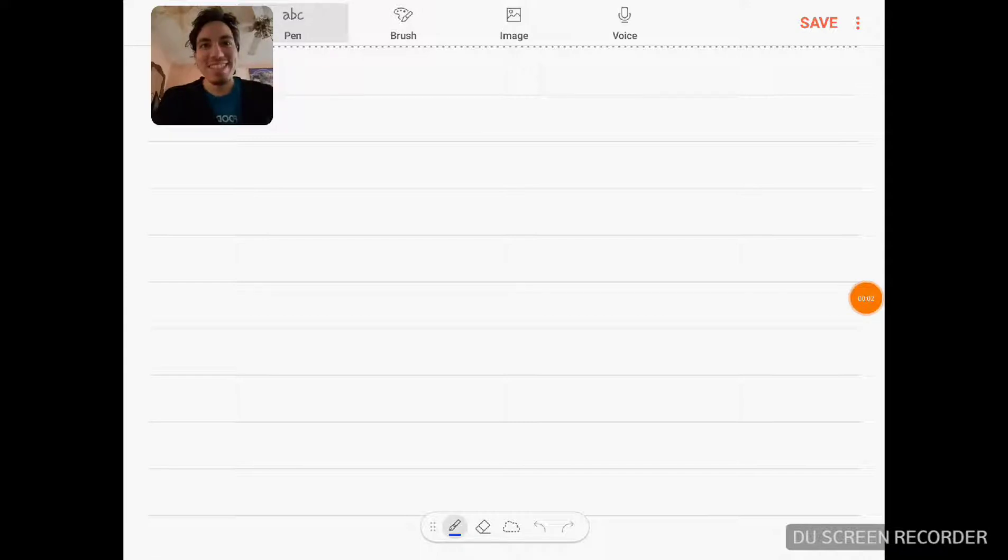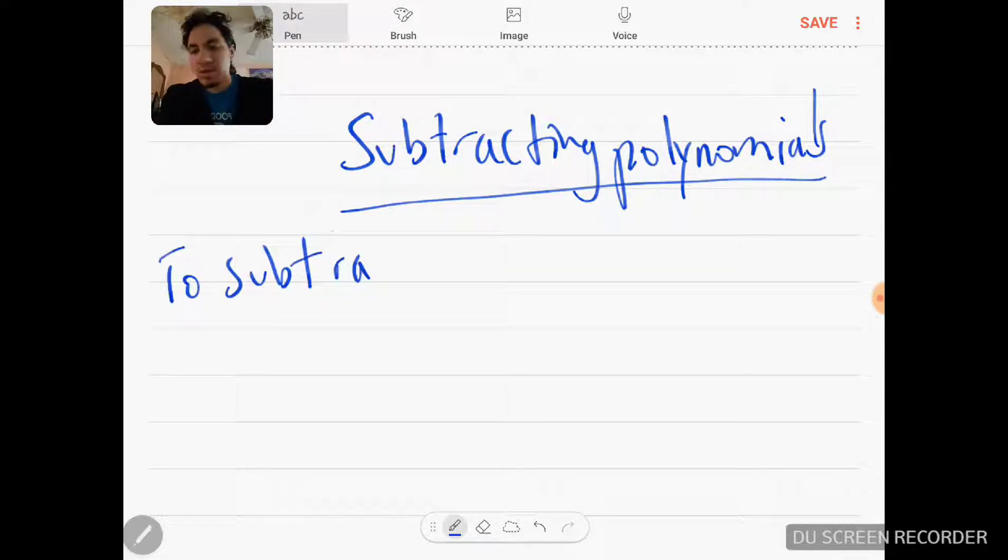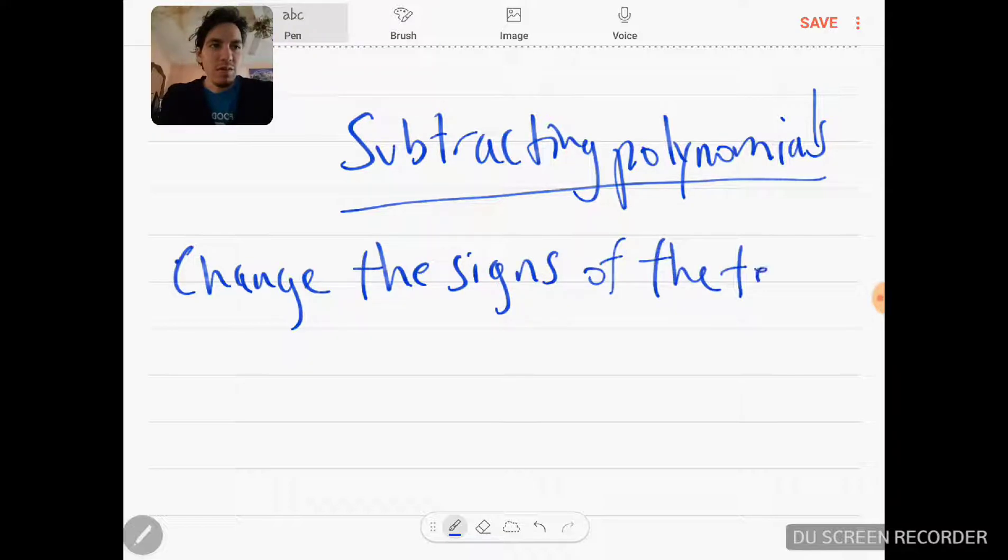Hey class, Absolute 5 here. Today we're going to talk about subtracting polynomials. To subtract polynomials, you have to change the signs of the terms of the polynomial being subtracted.